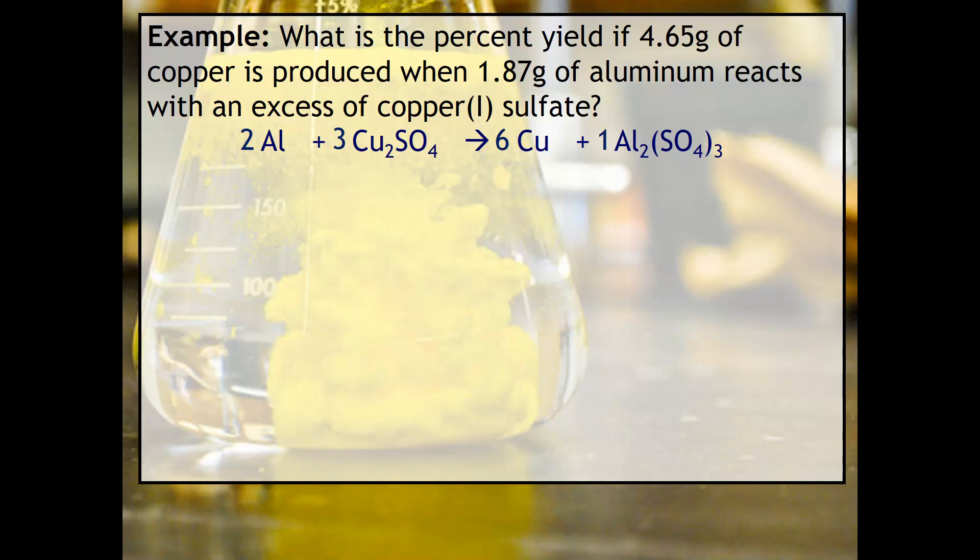Students often struggle with what these numbers mean. When we're looking at yield and it's asking for percent yield, we know that's what we're solving for. If it says 4.65 grams of copper is produced, that obviously has to be either the actual or the theoretical. If it's saying it is produced, that's assumed to be in the laboratory, so that is the actual amount.